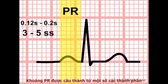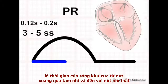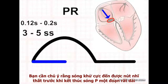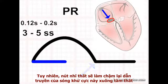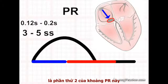The PR interval is made up of a number of elements. The first component is the time taken for the depolarisation wave, normally generated from the SA node, to traverse the atria and reach the AV node. Depolarisation reaches the AV node well before the end of the P wave. However, the AV node delays the transit of the impulse into the ventricles. This physiological delay in the AV node is the second major component of the PR interval.